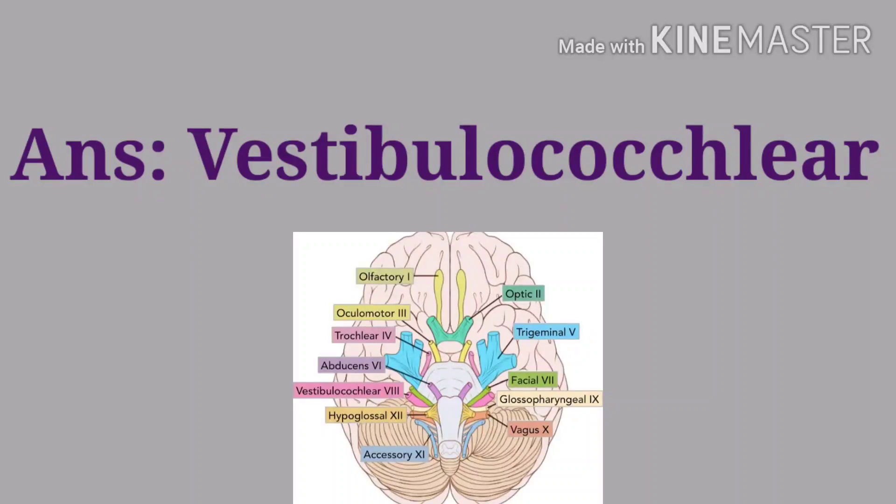The cranial nerves are 12 pairs: olfactory, optic, oculomotor, trochlear, trigeminal, abducent, facial, vestibulocochlear, glossopharyngeal, vagus, accessory, and hypoglossal.